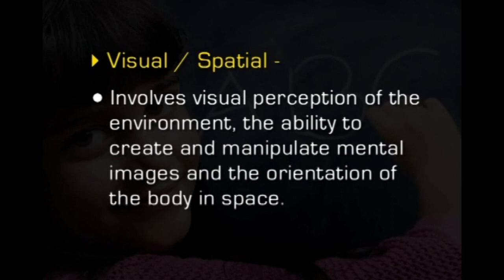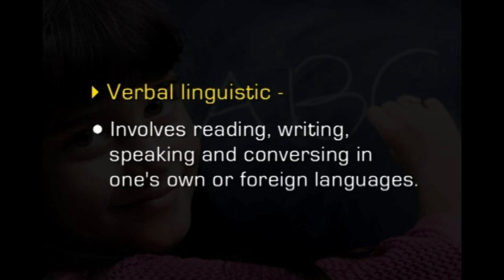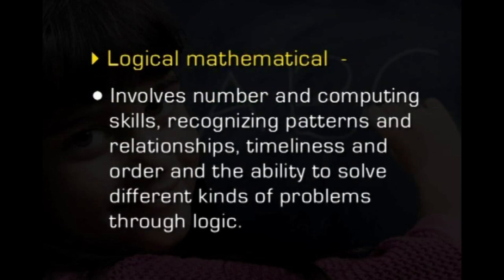Now we will see the eight intelligences in detail. Visual-spatial involves visual perception of the environment, the ability to create and manipulate mental images, and the orientation of the body in space. Verbal-linguistic involves reading, writing, speaking, and conversing in one's own or foreign languages. Logical-mathematical involves number or computing skills, recognizing patterns and relationships, timeliness and order, and the ability to solve different kinds of problems through logic.